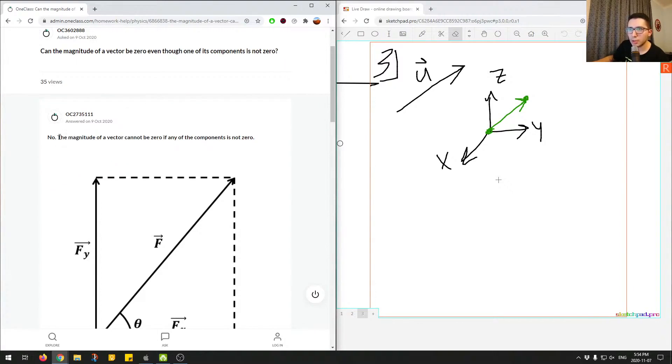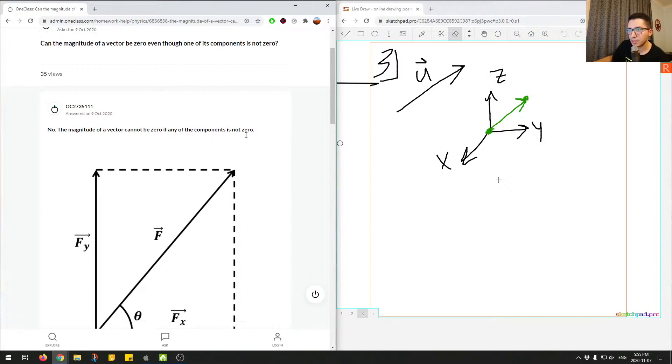So the answer is no, but the reasoning behind it is the magnitude of a vector cannot be zero if any of the components is non-zero.